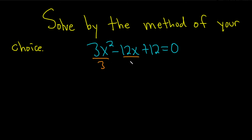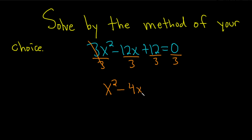So divide by 3, divide by 3, divide by 3, and then we'll see what happens. This gives us x squared minus 4x — since 12 over 3 is 4 — and then 12 over 3 is also 4, so this is equal to 0.